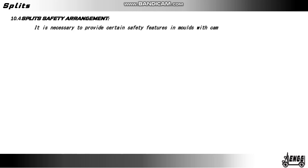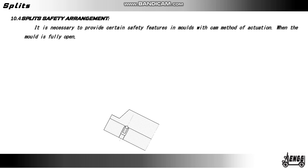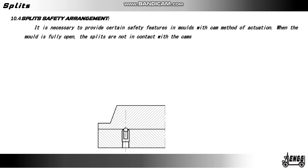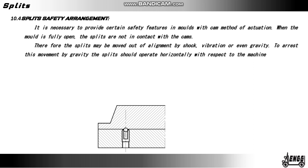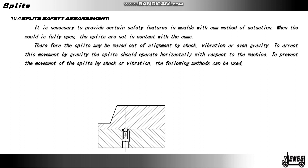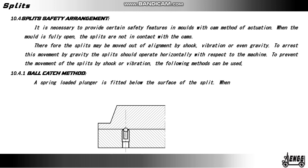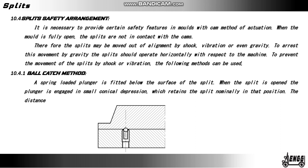Split safety arrangement: it is necessary to provide certain safety features in molds with cam method actuation. When the mold is fully open, the splits are not in contact with the cams; therefore the splits may be moved out of alignment by shock, vibration, or even gravity. To arrest gravity-induced movement, the splits should be operated horizontally with respect to the machine. To prevent movement of the split by shock or vibration, the following methods can be used. Ball catch method: a spring-loaded plunger is fitted below the surface of the split. When the split is open, the plunger engages in a small conical depression which retains the split in that position. The distance between the plunger and the depression is equal to the movement of the split.